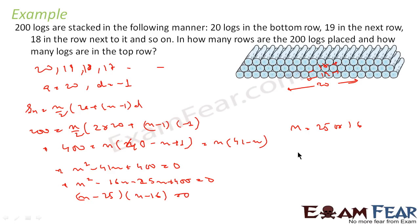Now, if we have to find A_16 or A_25, we have to find the number of logs which is in the top. So if n equals 25, A_25 is nothing but a + (n-1)d = 20 + 24 times minus 1. That comes out to be minus 4. That is not possible. Negative number is not possible for the number of logs. So 25 is not a valid option.